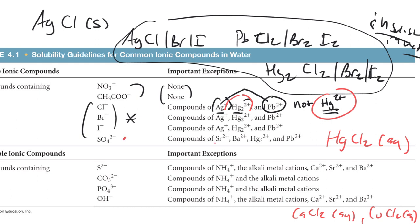For sulfate, the exceptions are strontium, barium, mercury(I), and lead(II) — notice silver is not on this list. Solubility is not fully yes or no; there's a range of solubility for just about every compound in water. The ones listed here as insoluble have solubility so low that we term them insoluble. You'll revisit this topic in chapter 17 in much greater detail, where you can look up equilibrium constants related to compound solubility — these 'insoluble' compounds actually have a very small but negligible solubility in water.